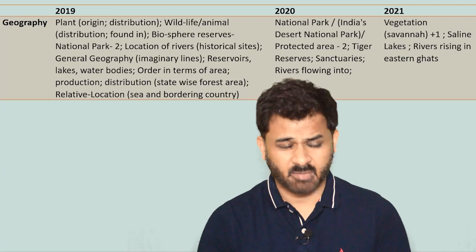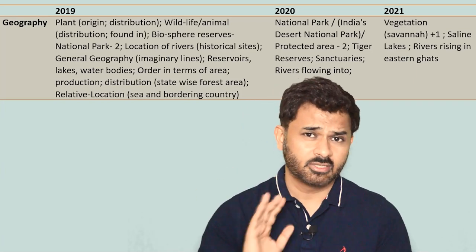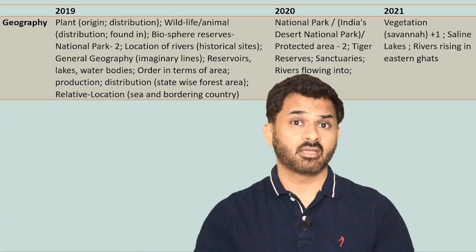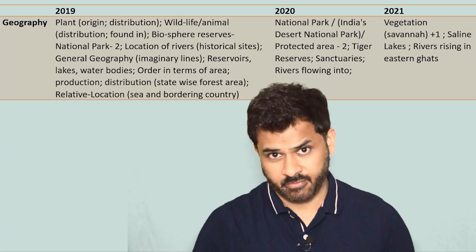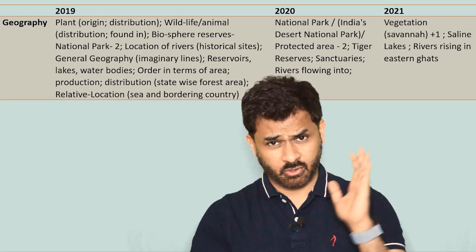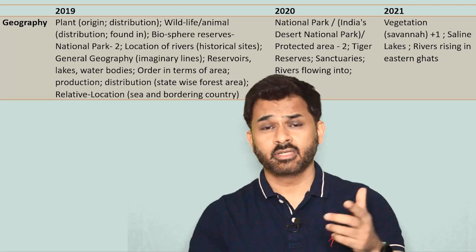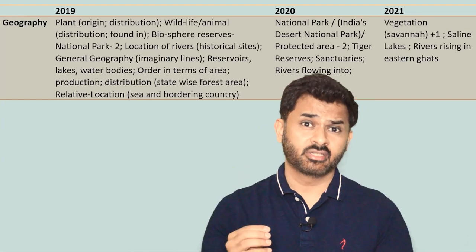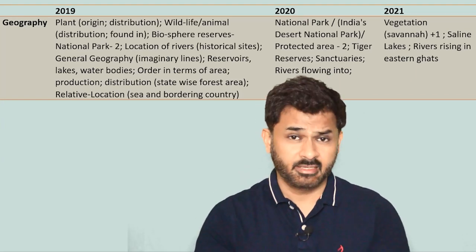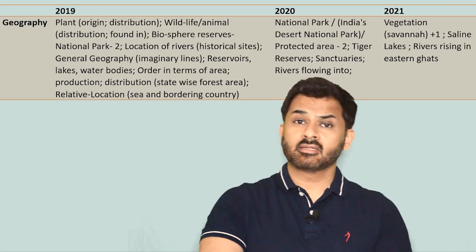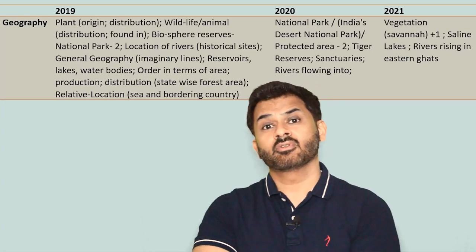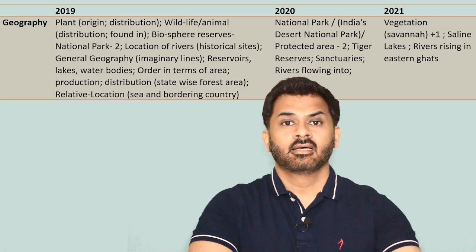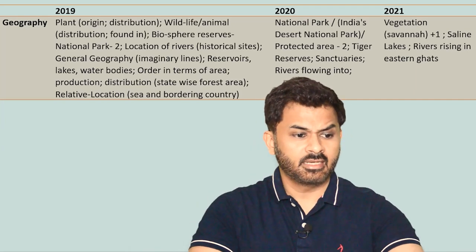As far as geography is concerned, there may be a lot of questions on Indian geography, physical geography, and world geography, but a particular trend is visible: a lot of questions are being asked on those related to environment and biogeography — short questions on national parks, sanctuaries, biosphere reserves, or any of the protected areas. You need to know their definitions and the localization and distribution of these environmental spaces in the Indian context so that you can easily answer those questions.